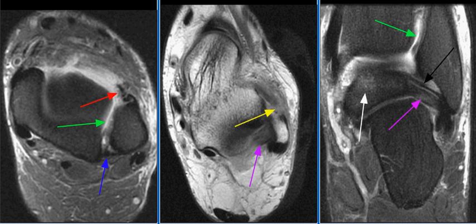In interosseous membrane injuries, linear T2 hyperintensity is seen between the distal tibia and fibula. In late stages, interosseous membrane hemosiderin, fibrosis, or calcification may be seen.